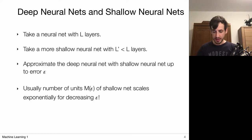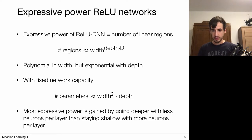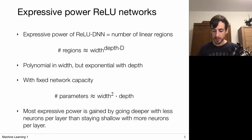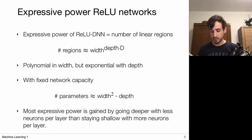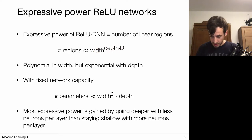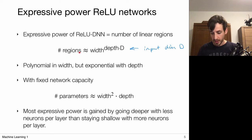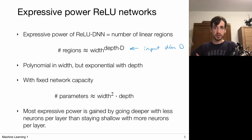In the context of ReLU networks, the expressive power is associated with the number of linear regions — the more pieces, the more accurate the approximation. The number of regions representable by ReLU-based deep neural networks scales polynomially with width but exponentially with depth, where d is the input dimension. So the most efficient way to gain more regions is not to widen the network by adding more hidden units per layer, but simply to go deeper and add more layers.